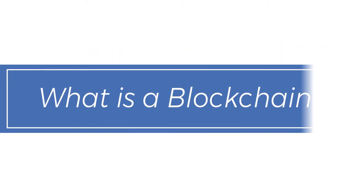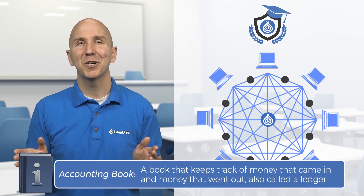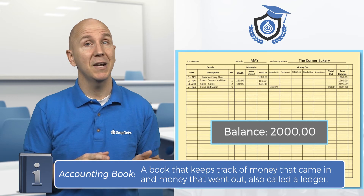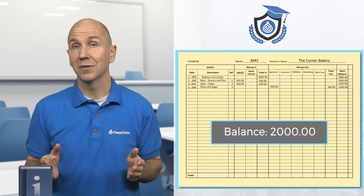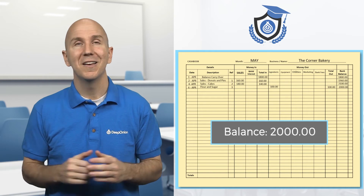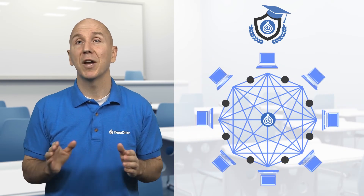What is a blockchain? Blockchain is a technology that allows people to store digital information on computers. Deep Onion has its own blockchain, which we call the Deep Onion blockchain. It's similar to a public accounting book that contains the incoming and outgoing of money and stores how much money each user holds, called a balance. This information or data is spread to everyone running the blockchain.